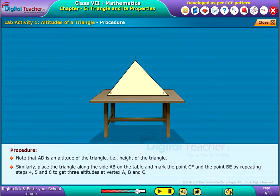Similarly, place the triangle along the side AB on the table and mark the point CF and the point BE by repeating steps 4, 5 and 6 to get three altitudes at vertex A, B and C.